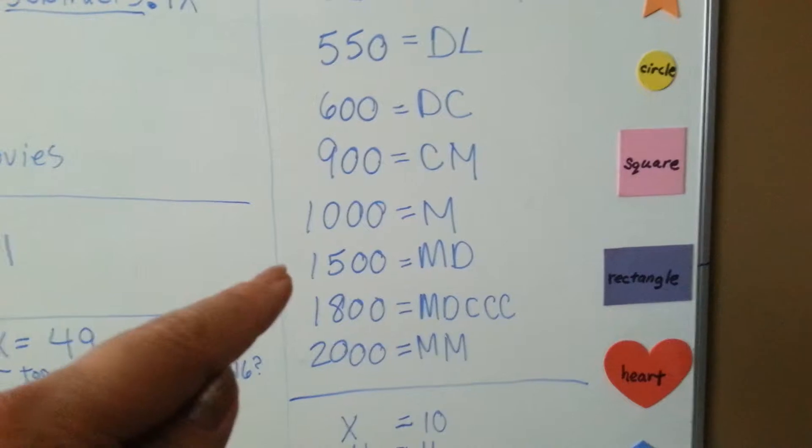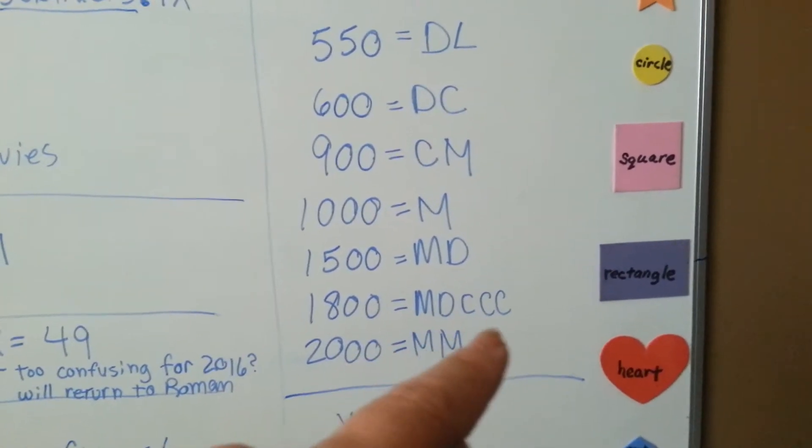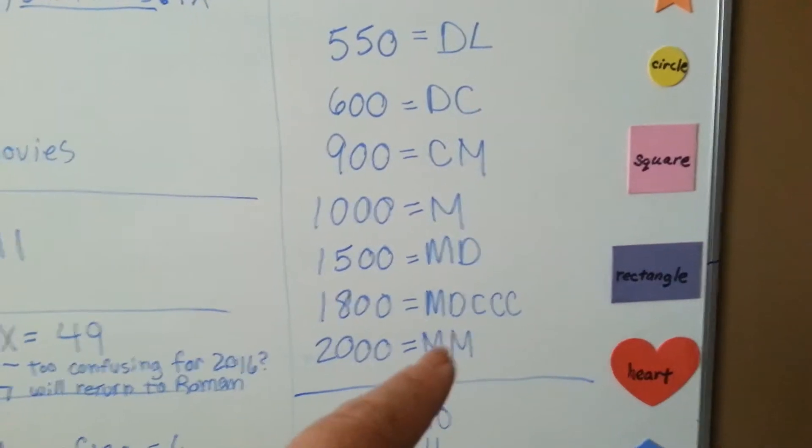There's our 1000, 1500 is MD, 1800 would be 1500 with 3 hundreds, and 2000 would be MM.